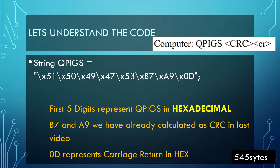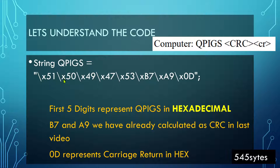Let's go line by line to understand the code. The first is: string qpigs equals this value. What you have here is the hexadecimal representation of QPIGS. The backslash-x represents that this is a hexadecimal reference: 51 represents Q, 50 represents P, 49 is I, 47 is G, and 53 is S. This is QPIGS followed by CRC. The CRC here is B7A9.